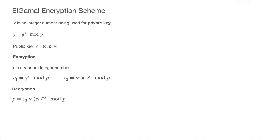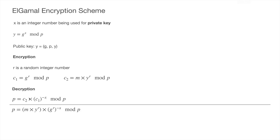In decryption we compute c2 * c1^(−x) mod p. Substituting the values: c2 = m * y^r and c1 = g^r. So c1^(−x) = g^(r*(−x)). Restoring y = g^x, the term g^(x*r) * g^(r*(−x)) equals 1, so those terms cancel and we recover the message m. This is why ElGamal decryption correctly restores the plaintext.